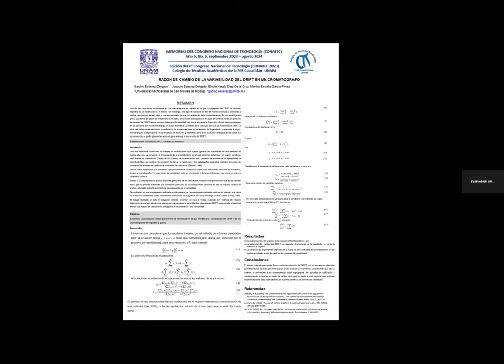Entonces en este caso, con base en lo que me respondió, la razón de cambio no es directamente proporcional para poder determinar el mantenimiento, sino que lo que se entiende es que es por la cantidad de uso que se le va dando. Así es, es algo que generalmente le llaman deriva y en este caso particular esa deriva recibe el nombre de drift, que es esa variabilidad que nos dice cuánto se puede deteriorar el equipo a lo largo del tiempo y en qué momento hay que darle el mantenimiento adecuado, a fin de que el análisis de las muestras o de residuos se haga de manera adecuada.